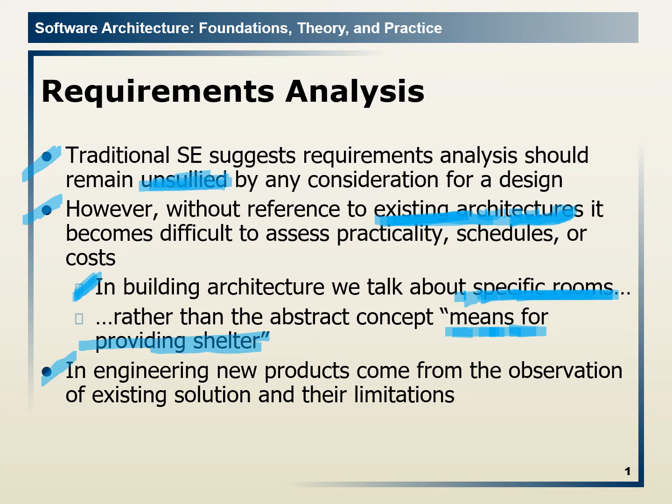In engineering, new products come from the observation of existing solutions and their limitations. Engineering should be based on experience from similar types of previous products. This is part of the concept of a product line — a family of products — where we can use experience, knowledge, and skills.